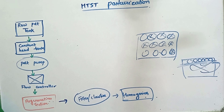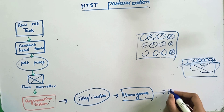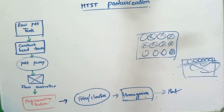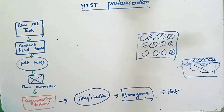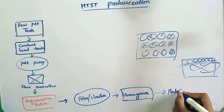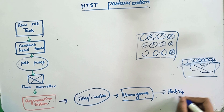From the homogenizer, the milk reaches the heating section. It is not possible to heat the milk to 72 degrees Celsius in the regeneration section, so only partial heating is done there. The remaining heating up to 72 degrees Celsius is carried out in this heating section.